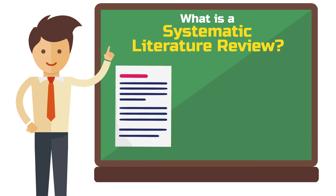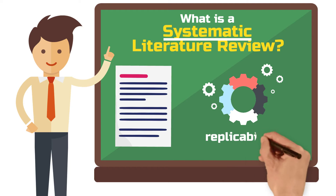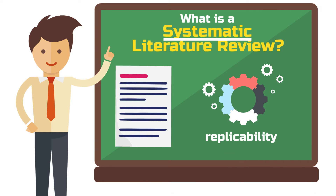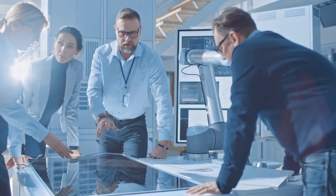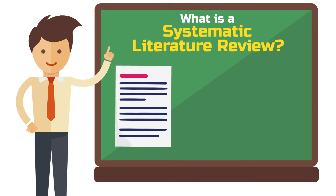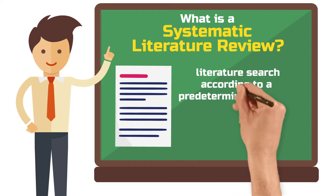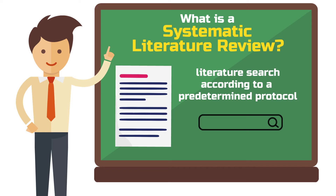The most important characteristic of such a study is the word systematic. You might have heard that the replicability of a research design is particularly important. In a systematic literature review, you are trying to achieve just this. If other researchers would want to replicate the analysis of the literature that you did, they get all the information they need from you. The search is carried out according to a predetermined protocol, so that ideally the same results are obtained upon repeated application.